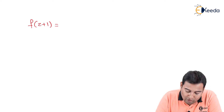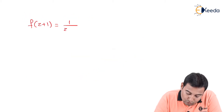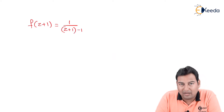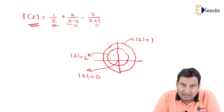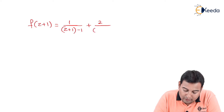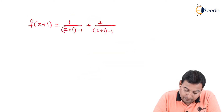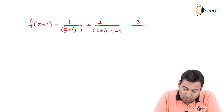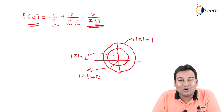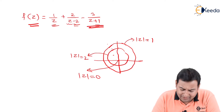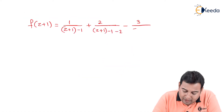So f(z) converted into (z plus 1) form: the first term 1 upon z becomes 1 upon (z plus 1) minus 1, since we replace z with (z plus 1) and subtract 1 to balance. The second term 2 upon (z minus 2) becomes 2 upon (z plus 1) minus 3. The third term, minus 3 upon (z plus 1), is already in (z plus 1) form — don't touch it, keep it as it is. So the converted form is: 1 upon (z+1 minus 1), plus 2 upon (z+1 minus 3), minus 3 upon (z+1).